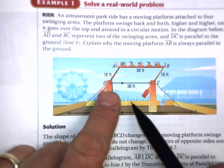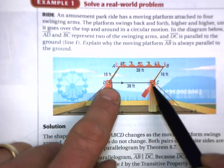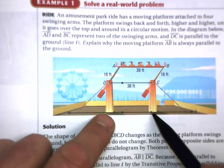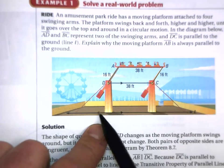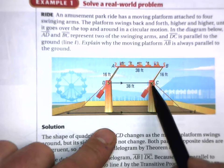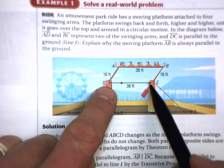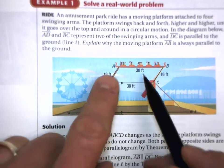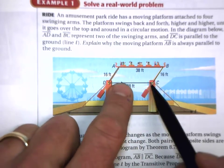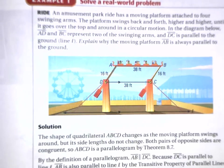It doesn't matter where you swing this thing around — it's always going to be parallel to this side. And of course, if the towers are the same height to the ground, then the ground is parallel to this bar across here, this side of the parallelogram. So the sled will always be parallel to this side, which is parallel to the ground — that's the point they're making there.